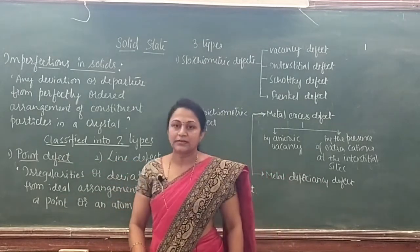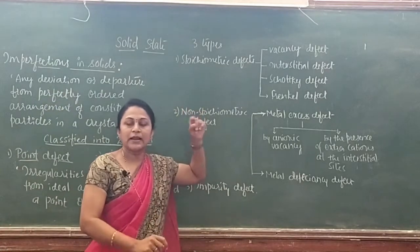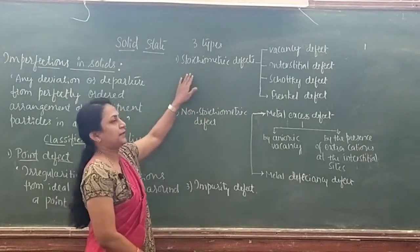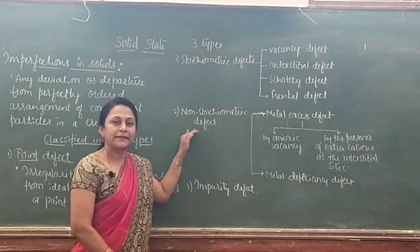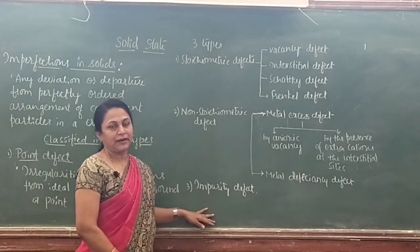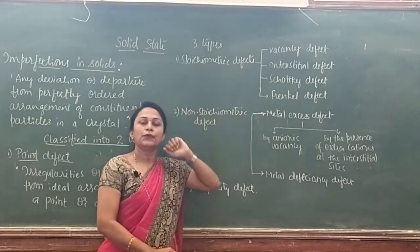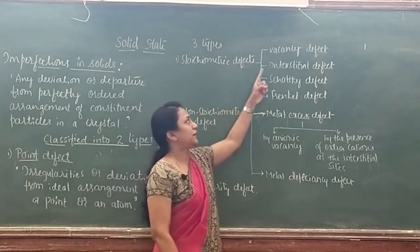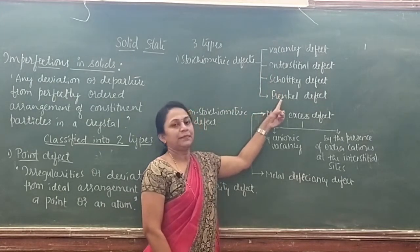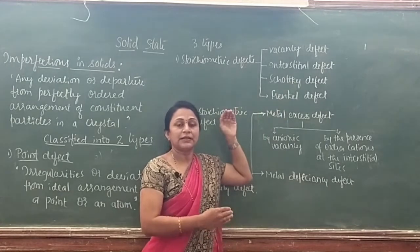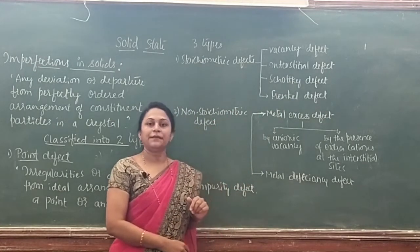Line defect is not covered here. Point defects are again classified into three types: stoichiometric defects, non-stoichiometric defects, and impurity defects. Stoichiometric defects are of four types: vacancy defect, interstitial defect, Schottky defect, and Frenkel defect. These were completed in the last video.